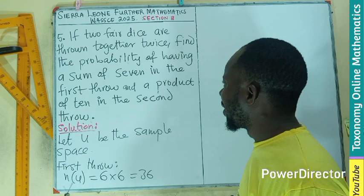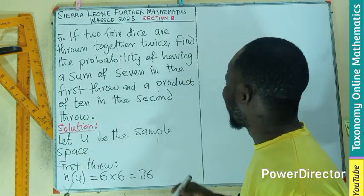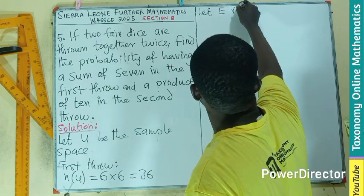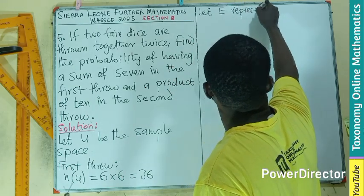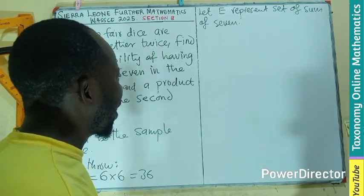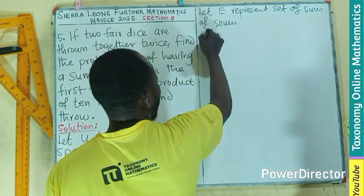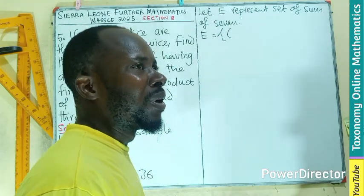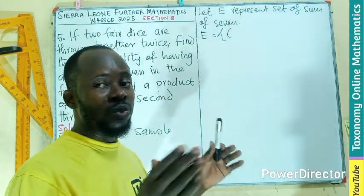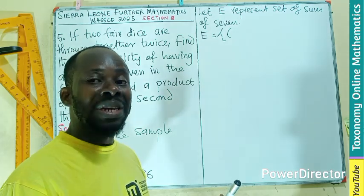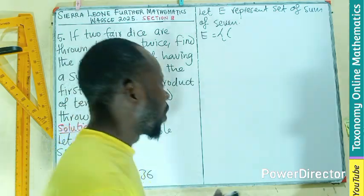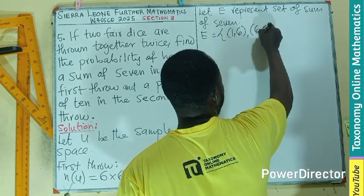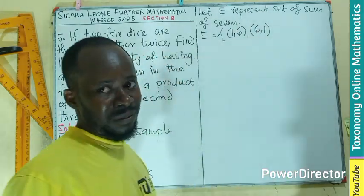Then we are looking for the sum of seven. So let E represent the set for sum of seven. We need to have the values from one to six. So if I'm going to get seven, then one and six will give me seven. So one for the first throw, then six in the second one. Then it means that six and one is also a chance. Then from there I need two plus five, which are all in the sample space. So I have two, five.